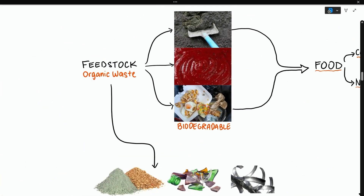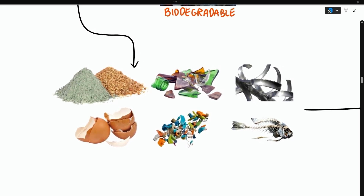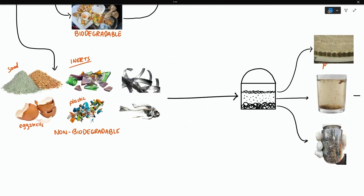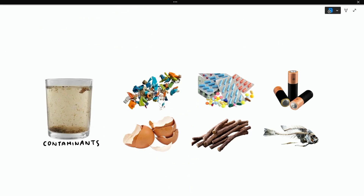Now realistically, your feedstock will have stuff mixed in it that is either difficult or impossible to digest by the bugs in the digester. We call these non-biodegradable solids. Some solids are non-biodegradable simply because they don't tend to react with any chemicals at all, let alone bugs — like sand for example. And we call these inert solids or inerts. Some solids are non-biodegradable because the bugs physically can't eat it, like eggshells and plastic. Non-biodegradable solids can float to the surface or sink to the bottom of the tank as grit, but they can also pass through the digester and end up as contaminants in the digestate.